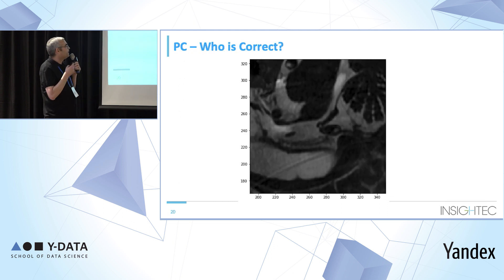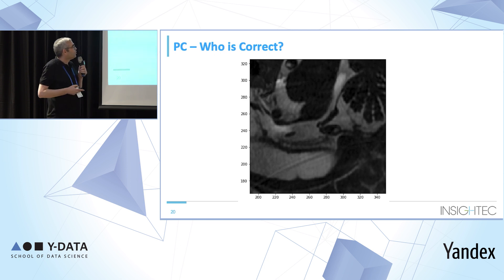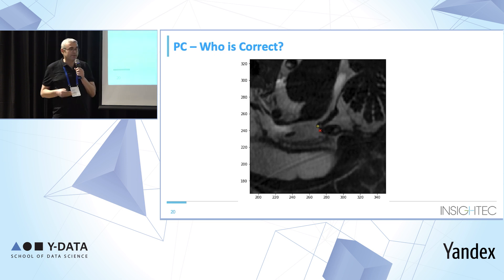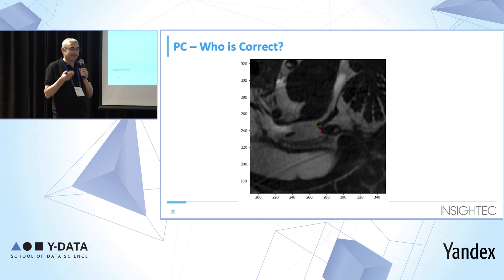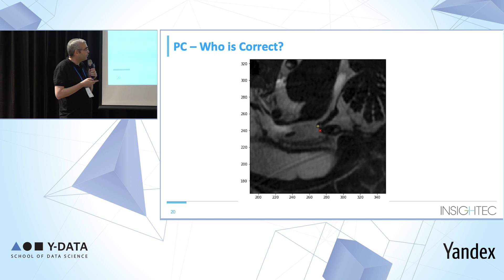One interesting case: instead of one valley, there were two valleys. The predictor assigned the upper one and the user assigned the lower one. I asked the clinical experts in the company and most of them said that the yellow — the predictor's result — is the correct one.